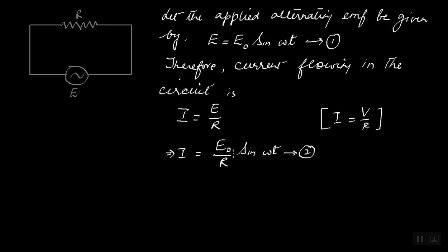So when will this current be maximum? If you look at this equation two, you can see that it depends on sine omega t. That means there is a sine function out here. So we know that a sine function has got maximum and minimum values. What is the maximum value of sine? The maximum value of sine is one, and its minimum value is zero.